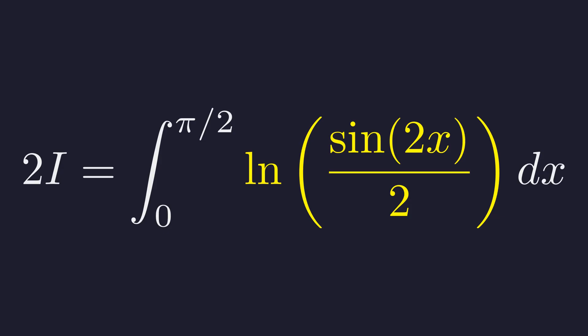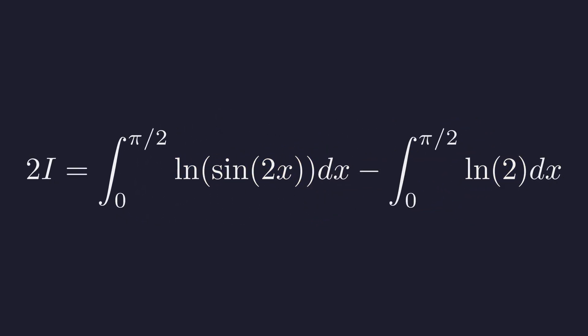Next, we use another logarithm property. The log of a quotient is the difference of the logs. This allows us to split our integral into two separate, simpler integrals.